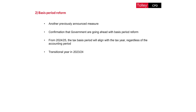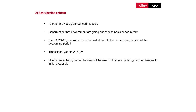The transitional year for these proposals will be 2023/24, when for any business that does not have a tax year aligned accounting period there will be a long accounting period taxed. For example, if you have a 31st of December year end you will be taxed on the profits from the 1st of January 2023 through to the 5th of April 2024 - so around a 15-month accounting period. Any overlap relief being carried forward will be used in that year.